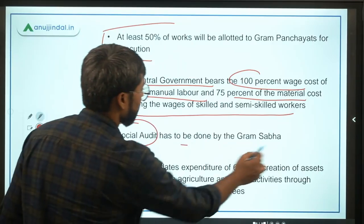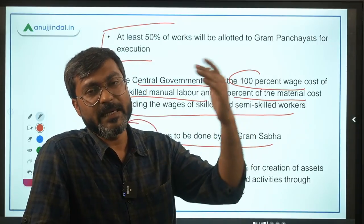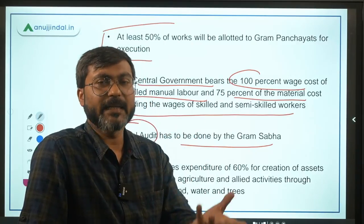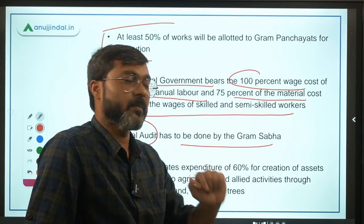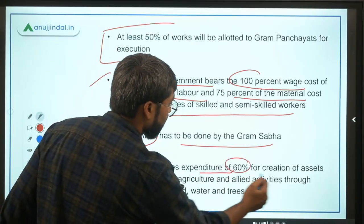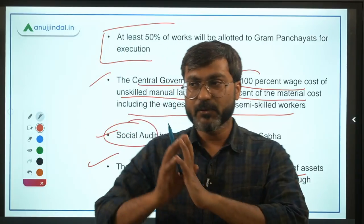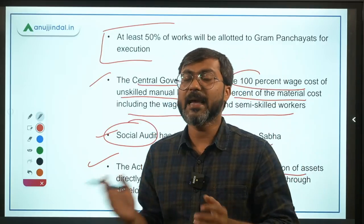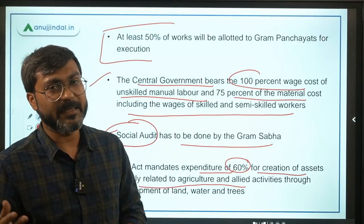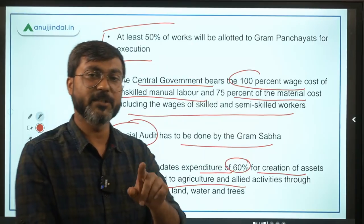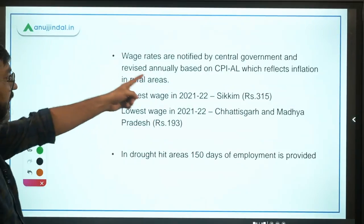Social audit has to be done by the Gram Sabha. Social audit means an audit done by the government and the people who are affected by that particular scheme. Additionally, the act mandates that 60% of expenditure must go towards creation of assets directly related to the agriculture and allied sector. So out of all assets created through unskilled manual work, 60% should be related to the agricultural allied sector.